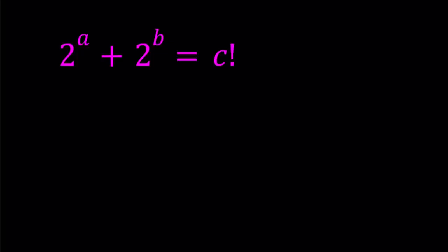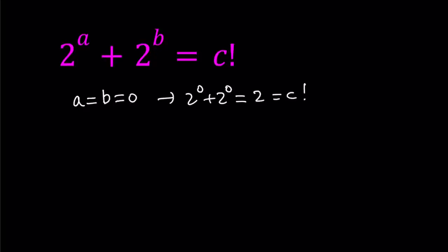First of all, let's observe that we can find some particular solutions. For example, if a and b are both equal to 0, then we get 2 to the power 0 plus 2 to the power 0, which is equal to 2. And 2 can equal c factorial because 2 factorial equals 2. So we get a solution: a, b equals 0 and c equals 2. So (0, 0, 2) is a solution.